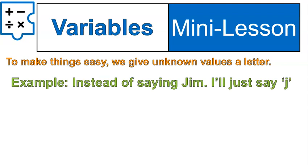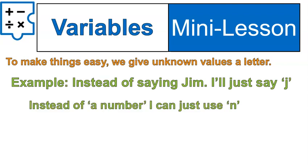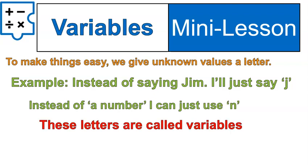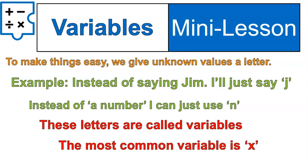And that just becomes complex. So we start labeling these unknown values using variables. It's to make things easier. We just give an unknown value a letter. For example, instead of saying Jim, I'll just use the letter J. Instead of saying a number, I can just use N. These letters are called variables. That's what they are. The most common variable is the letter X. You'll see that in equations and expressions all the time, solving for that letter X. That's what a variable is. It's just a place filler.